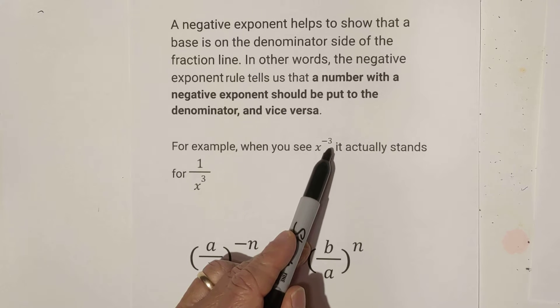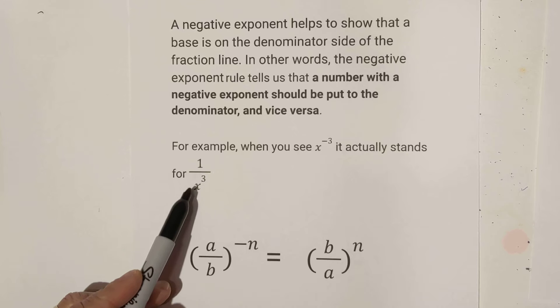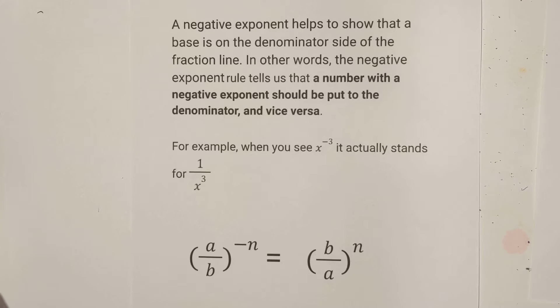So here's what it looks like in reality. You have x to the negative third. It actually stands for 1 over x cubed, and the cube now is positive.